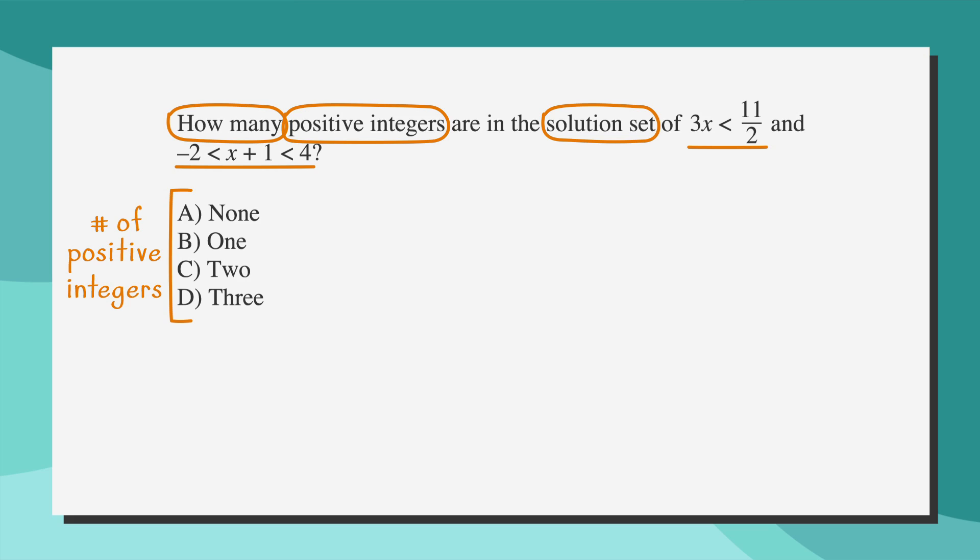Plugging 1 into x for the equation, we get -2 < 1+1 < 4, or -2 < 2 < 4. This is a true statement. The only value for x that works in both expressions is 1. The question asks us, how many positive integers are in the solution sets? Our answer should be 1, because there is only 1 positive integer that worked in both solution sets. Answer choice B, which is 1, is the correct answer.